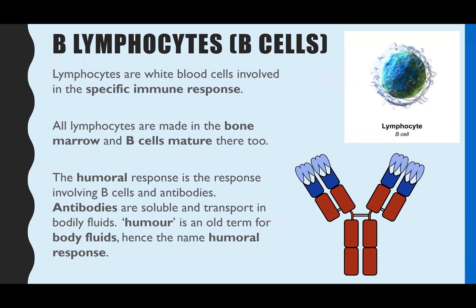B-lymphocytes, also known as B-cells, are lymphocytes — white blood cells involved in the specific immune response, meaning it's all to do with the response to particular antigens. All lymphocytes are made in the bone marrow, and B-cells mature there too. The humoral response is the response involving B-cells and antibodies. It's called 'humoral' because an olden days term for bodily fluids was 'humor,' and because antibodies are soluble and transport around in the blood and other bodily fluids.